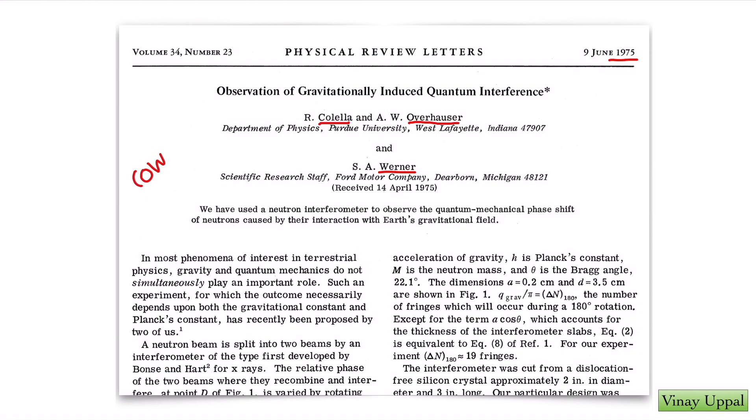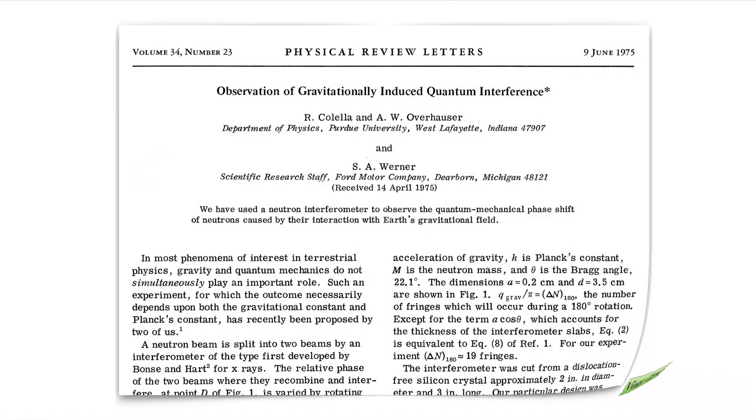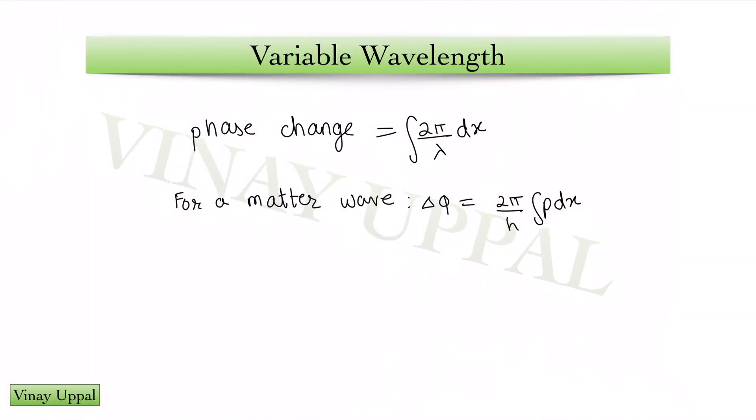Let us have a look at the concept and then I will show you the question. For a general wave, for a normal wave, if a wave travels a path length of x, the phase change is going to be kx which is 2π/λ times x. This is something that should be familiar to everyone.